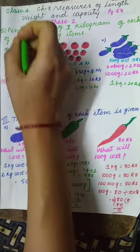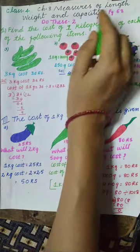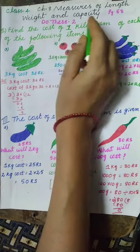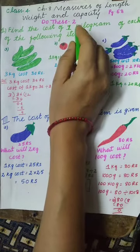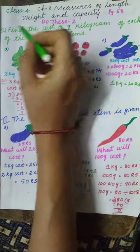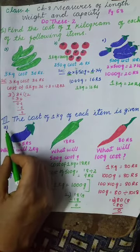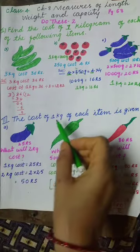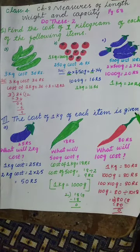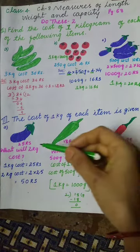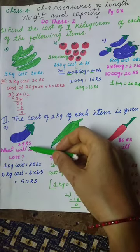Hi children, today we are discussing Class 4, Chapter 8: Measures of Length, Weight and Capacity, page number 68. Question number 2 we have already completed. Now I am explaining question number 3. The cost of 1 kg of each item is given here.